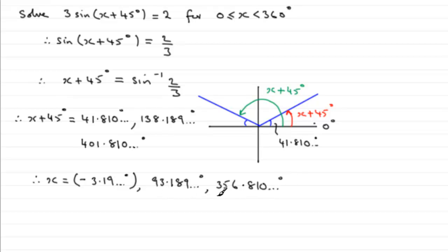So it's these two that are in range. And we're told to give our answers in degrees to one decimal place. So finally then we've got that therefore x equals 93.2 degrees.